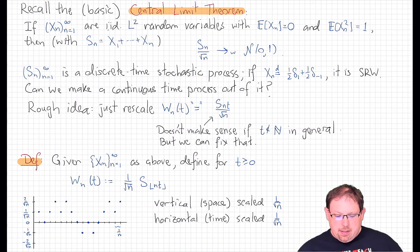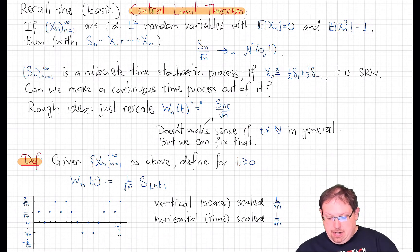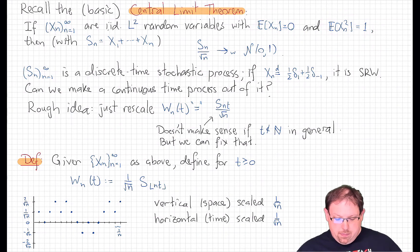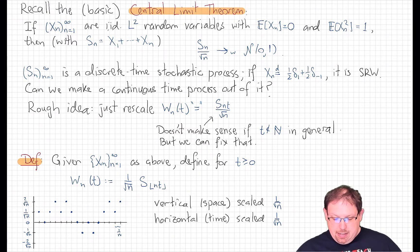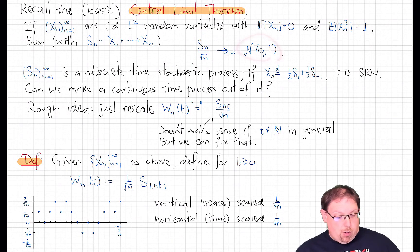Let's start by recalling the basic central limit theorem. If x_n is a sequence of independent, identically distributed L2 random variables on some probability space that is standardized — that is, centered with variance 1 for each term — then if we take the sum of those random variables up to level n and normalize by the square root of n, which is the standard deviation of that sum, then that renormalized sum converges weakly to a standard normal random variable.